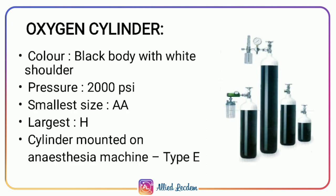The oxygen cylinder has a black body with a white shoulder. The pressure in the cylinder is 2000 psi (pounds per square inch). The smallest size is double-A and the largest is size H. The cylinder mounted on the anesthesia machine is type E. A fully loaded cylinder has a pressure of 2000 psi, and on usage the pressure gradually decreases.